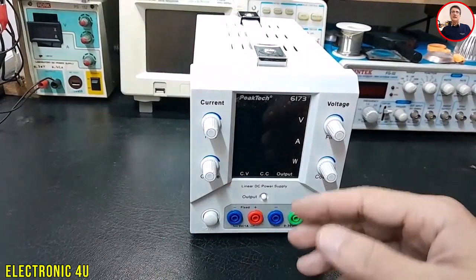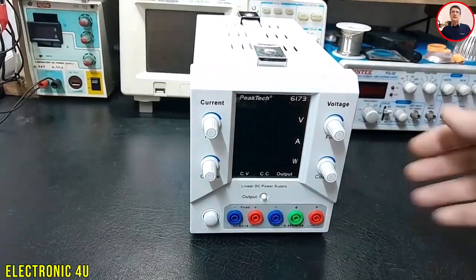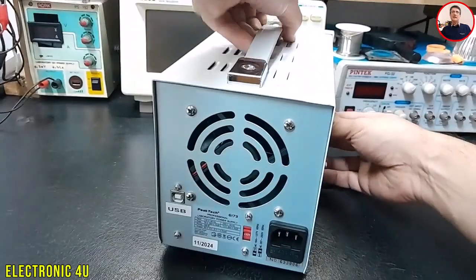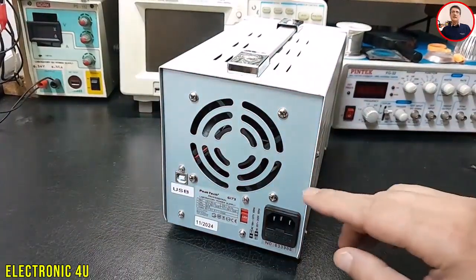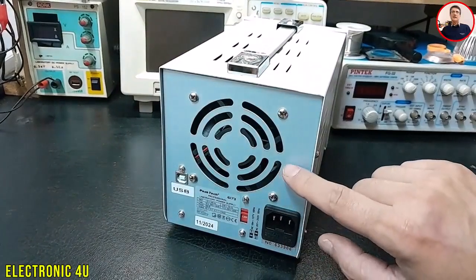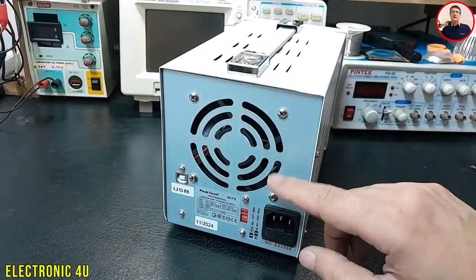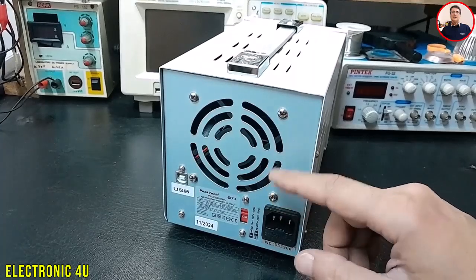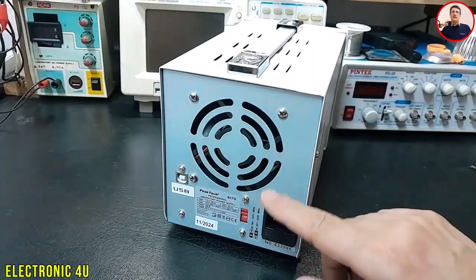Alright, now let's take a look at the back of the device. Here we have some important parts - the power cable input and the cooling fan. One important thing in power supplies is the fan noise, and this fan seems very quiet and high quality at first look.